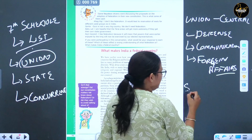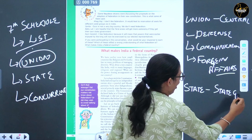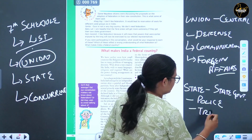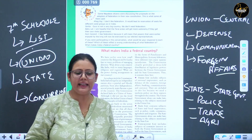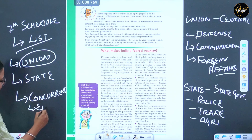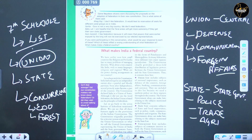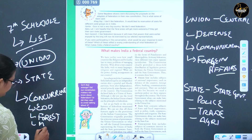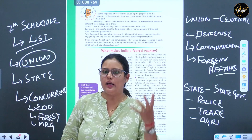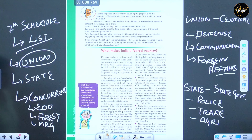In the Union List, all subjects mentioned are those on which the central government makes laws - like defense, communication, and foreign affairs, which impact the entire country. In the State List, subjects like police, trade, commerce, and agriculture are mentioned - subjects important to individual states - and state governments make laws on these. In the Concurrent List, both central and state governments have the power to make laws - subjects like education, forests, and marriage fall here.